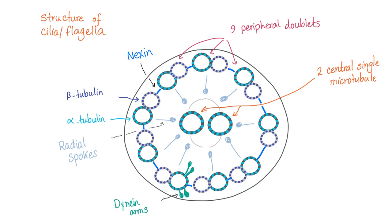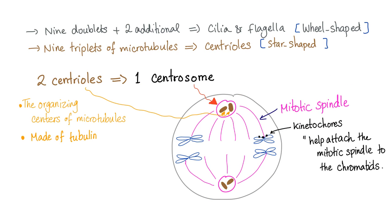A defect in dynein arms results in Kartagener syndrome. If you have 9+2, you have cilia and flagella. If you have nine triplets, you have centrioles. Two centrioles form one centrosome. The centrosome organizes the microtubules, which form the mitotic spindle and attach to chromatids through structures called kinetochores. Centrioles are made of tubulin because they are microtubules.